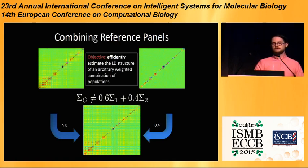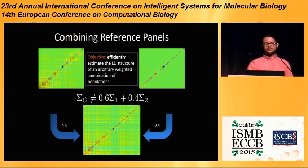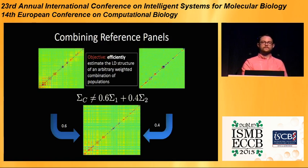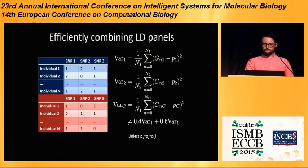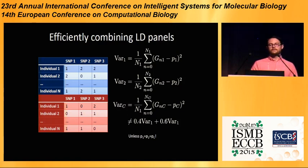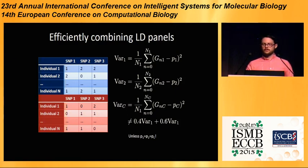In combining reference panels, the goal is to take perhaps 60% of one population and 40% of another. Unfortunately, you can't simply multiply them and add them together. What we want to do is find a way to efficiently estimate the LD structure of an arbitrarily weighted combination of populations. This is complicated by the fact that the allele frequencies differ in the two populations, so you need a correction factor that accounts for those differences. The details of the computation are in the paper.